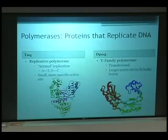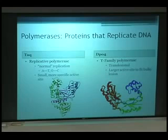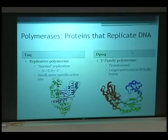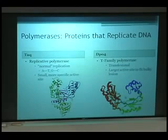Polymerases are a special type of protein that replicates DNA. TAC polymerase is an example of a replicative polymerase — that's how normal DNA gets replicated, where A binds with T and C binds with G. The shape is kind of like a hand, with a thumb and fingers, but the active site is really small and very specific. DPO4, the protein I'm working with, is a Y-family polymerase, also called a translesional polymerase. It has a similar hand-shaped structure, but with a much wider active site that's able to fit a bulky lesion.